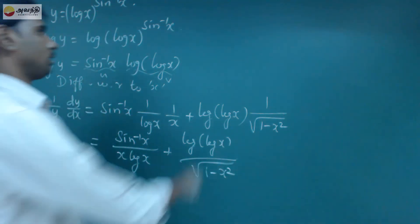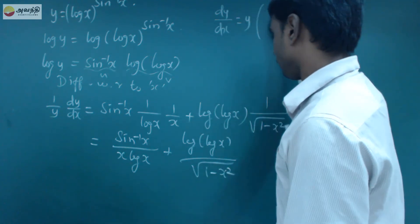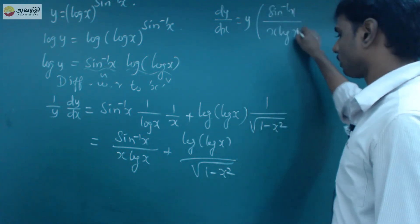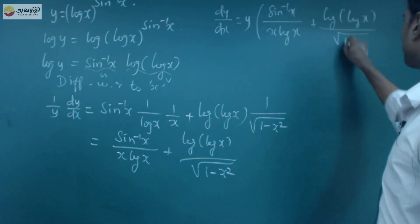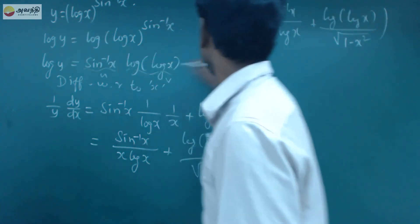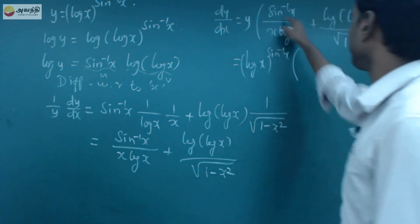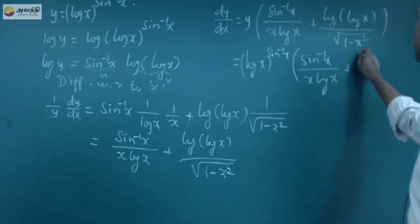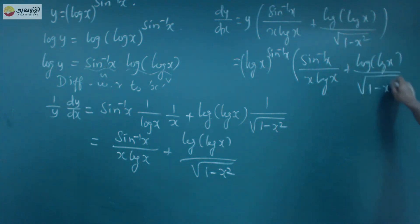So dy by dx equals y into sin inverse x by x into log x plus log of log x by square root of 1 minus x squared. Substituting the value of y, that is (log x)^(sin inverse x), the final answer is dy by dx equals (log x)^(sin inverse x) times sin inverse x by x into log x plus log of log x by square root of 1 minus x squared.